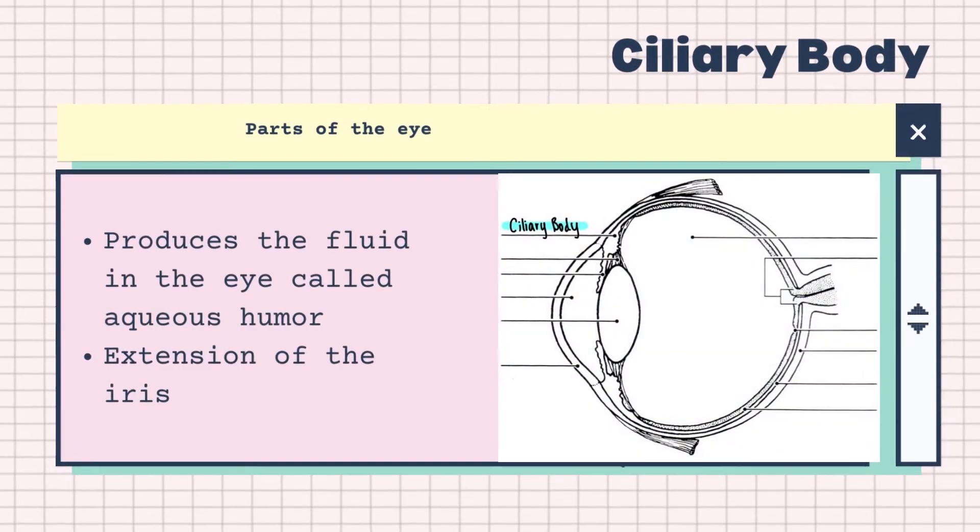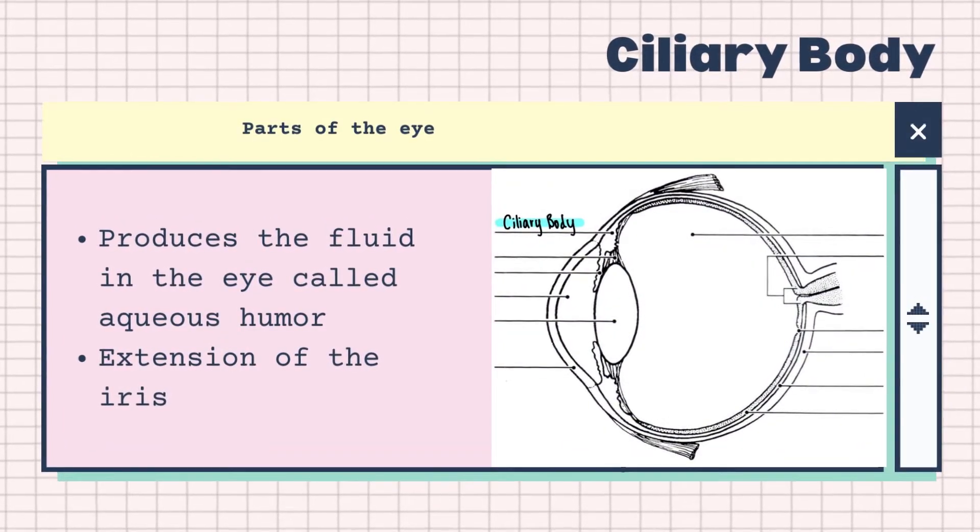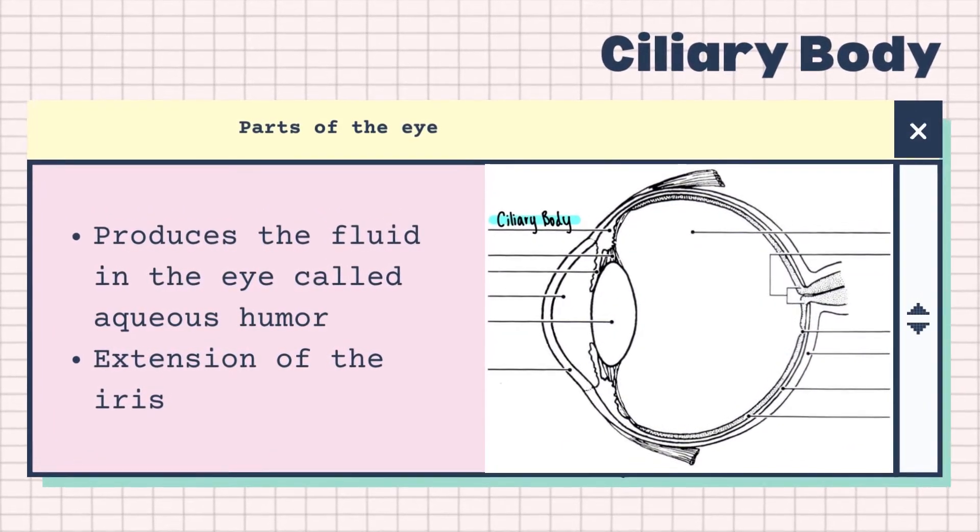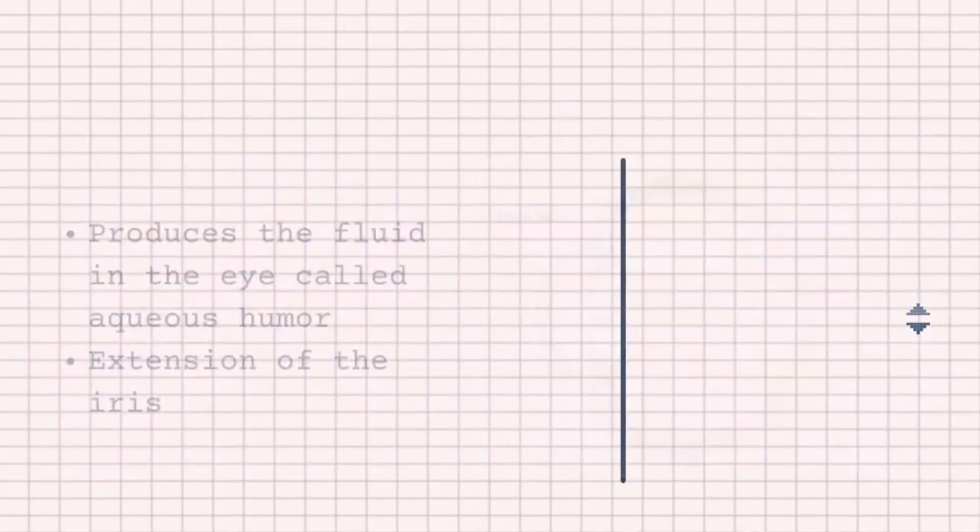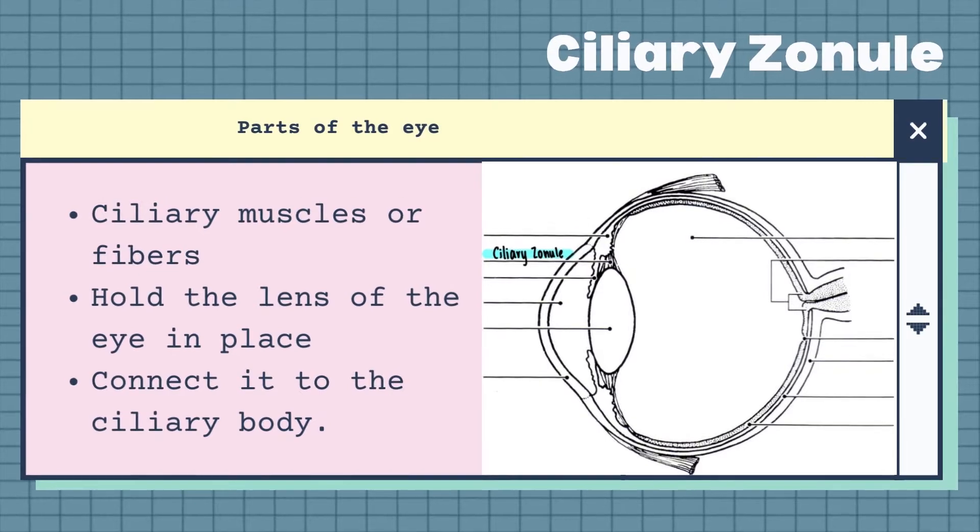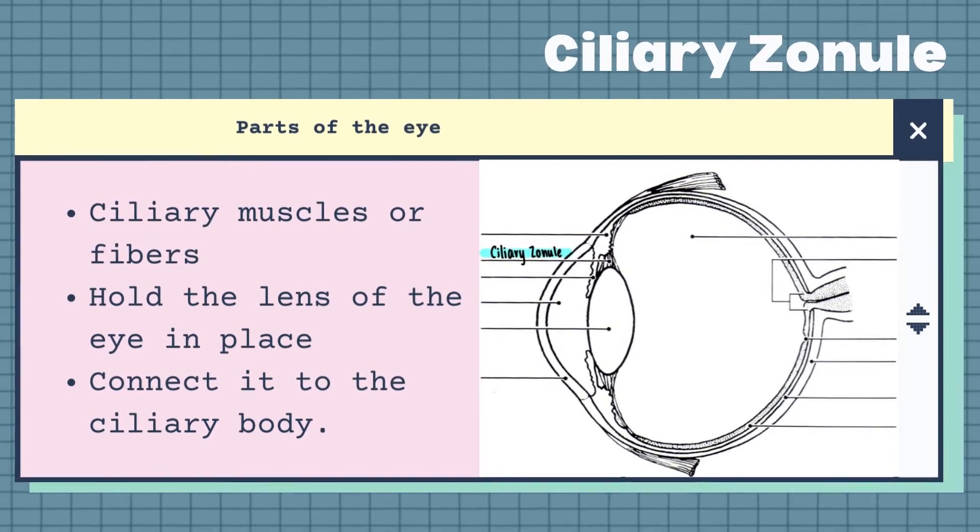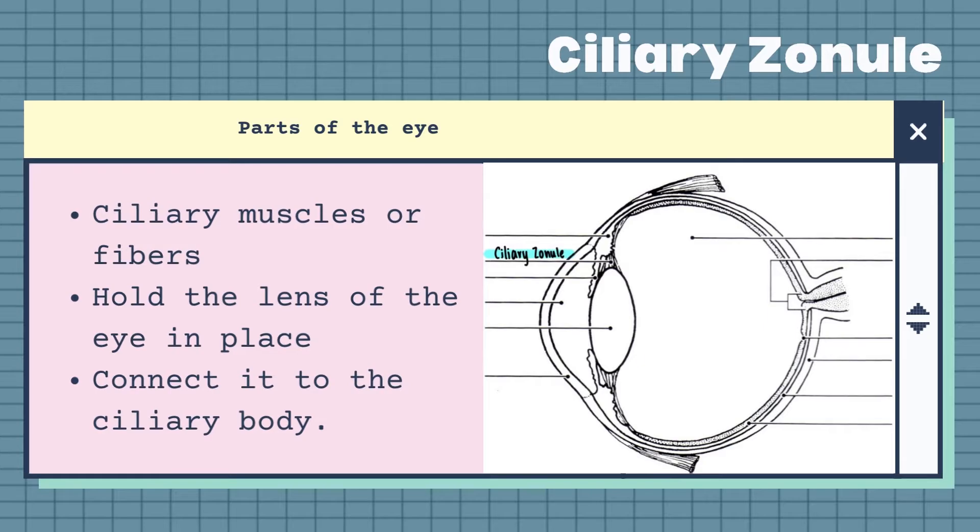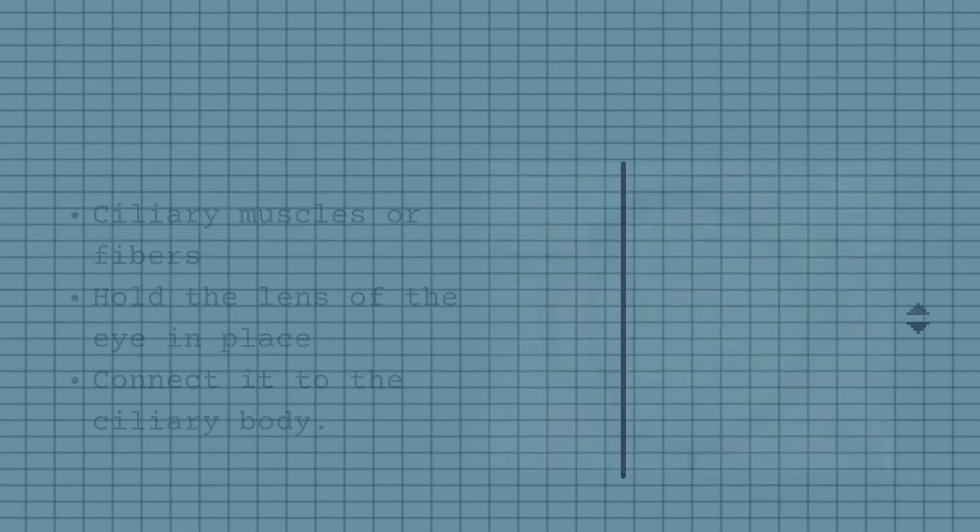Firstly, there's the ciliary body. It produces the fluid in the eye called aqueous humor and is also an extension of the iris. The ciliary zonule is next on the list and it's more well known as the ciliary muscle or fiber. They hold the lens of the eye in place and connect it to the ciliary body.